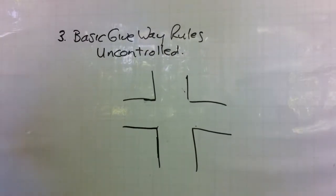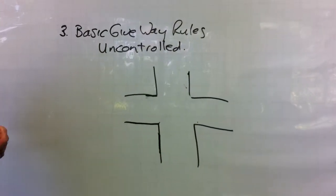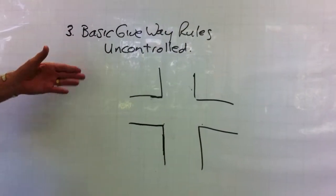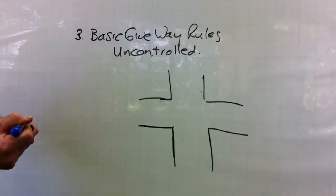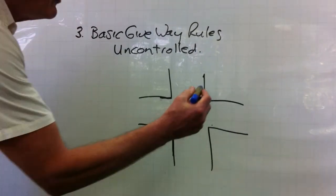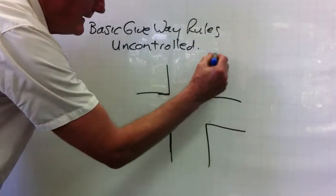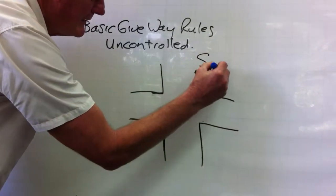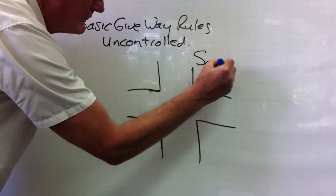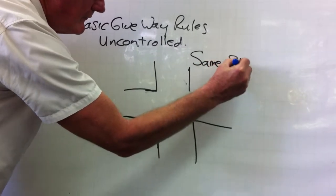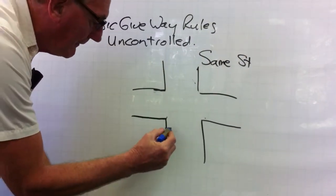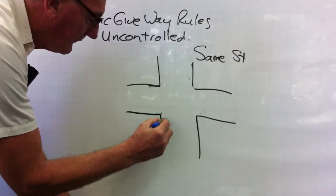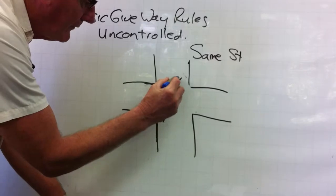The second rule for basic give way rules at uncontrolled intersections. This time we're talking about cars being in the same street, and the same street could be at 6 and 12,